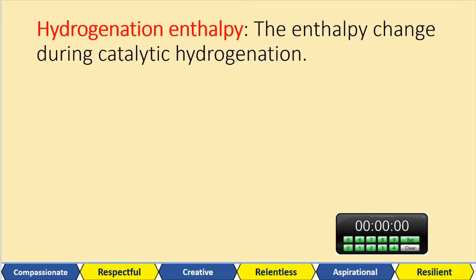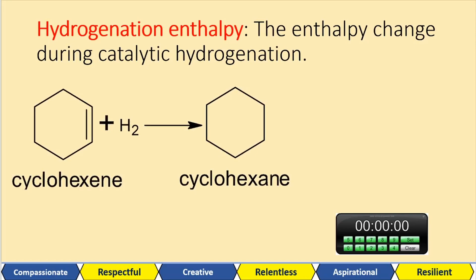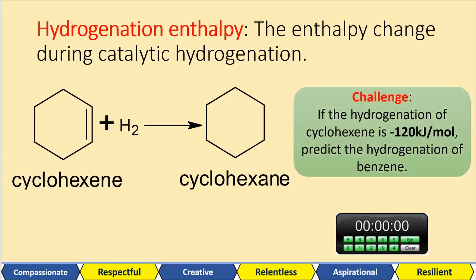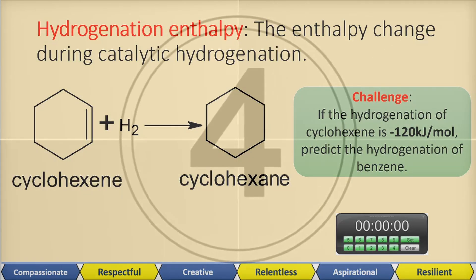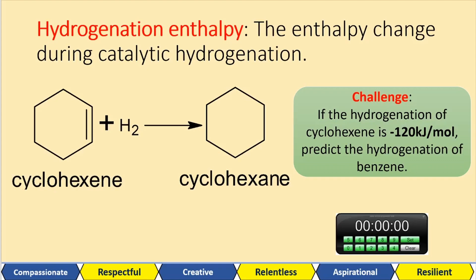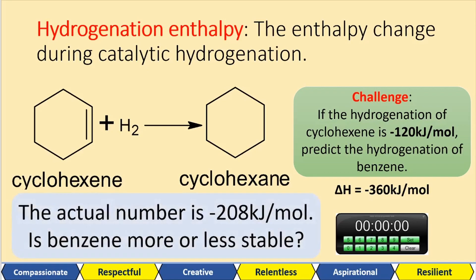Now we're going to the hydrogenation enthalpy — the enthalpy change during catalytic hydrogenation. Let's first look at cyclohexene. We add hydrogen to cyclohexene: the hydrogen breaks the double bond and attaches to the corresponding carbons, creating cyclohexane. Hexenes are alkenes with double bonds. Have a go at this challenge question — pause the video. If the hydrogenation of cyclohexene is minus 120 kilojoules per mole, predict the hydrogenation of benzene. In the Kekulé model we actually had three double bonds, so we multiply that by three to give us a predicted enthalpy change of minus 360 kilojoules per mole. But the actual number is minus 208 kilojoules per mole.